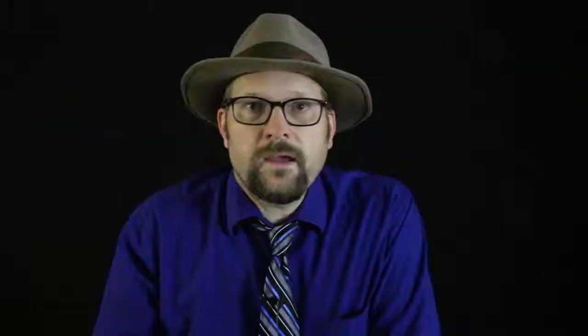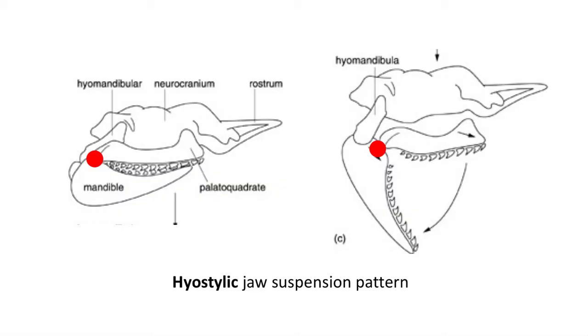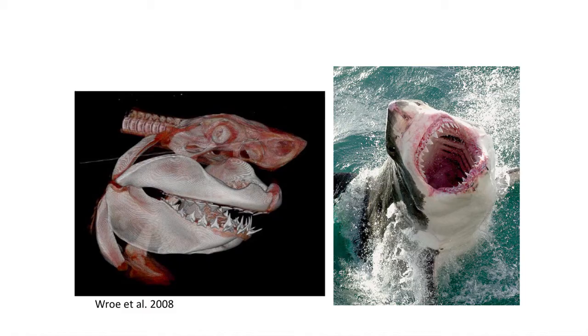More advanced sharks exhibit a hyostylic jaw suspension pattern. This is where the palatoquadrate is not attached to the neurocranium and can hinge forward. The jaw is pushed forward by the motion of the hyomandibula, which pushes both the lower and upper jaws forward and out of the mouth. This is the classic shark bite, and you can see this style of biting when sharks feed.